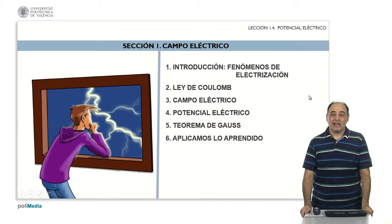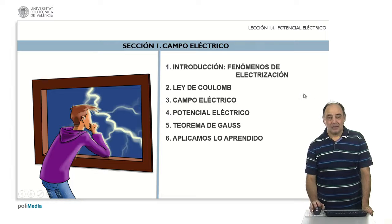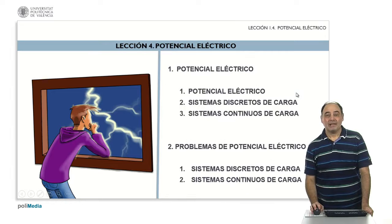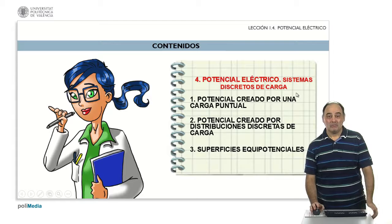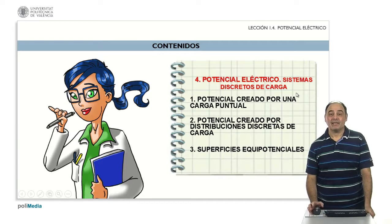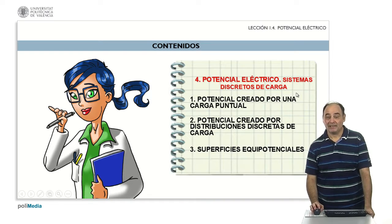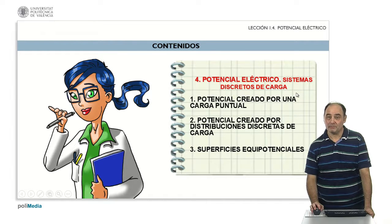Hello, continuing with lesson 4, dedicated to the study of the electric potential, we are going to see how to calculate it in the case of discrete systems of charge. We are going to analyze first how is the potential of the field created by a point charge, then by a distribution of point charges, and finally, the concept of equipotential surfaces and their most relevant properties.